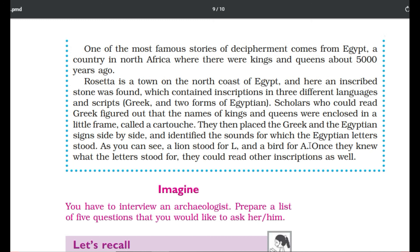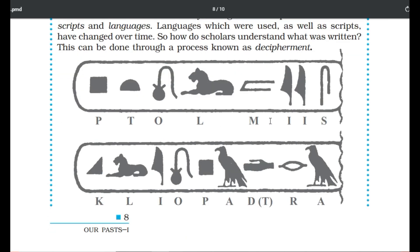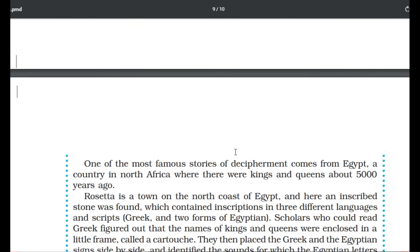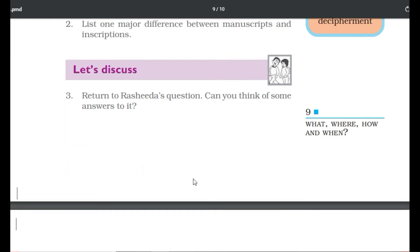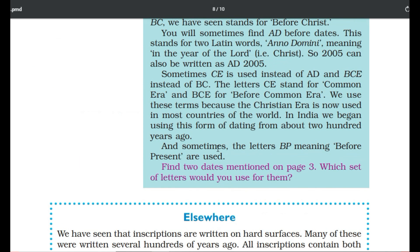They then placed the Greek and Egyptian signs side by side, identifying the sounds for which the Egyptian letters stood. For example, a line stands for L and a bird for A. Once they knew what the letters stood for, they could read other inscriptions as well. So students, the chapter is over. I hope you understood it well. Do subscribe to the channel, and we'll meet again in the next video. Till then, take care, bye bye.